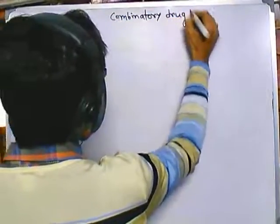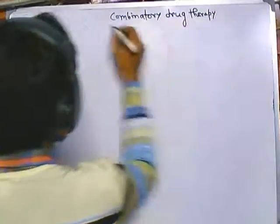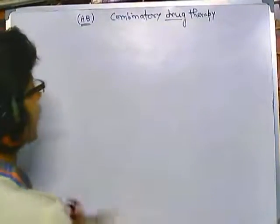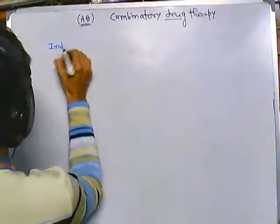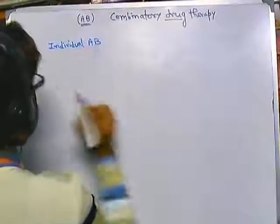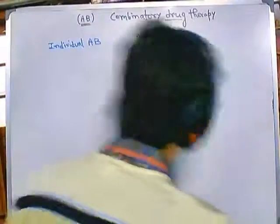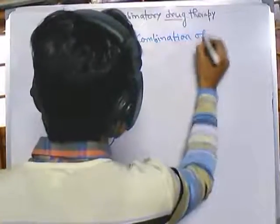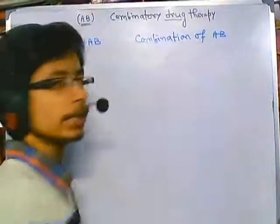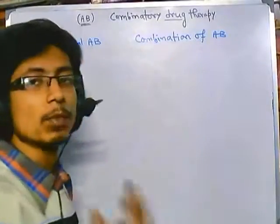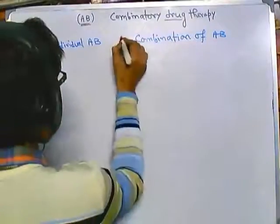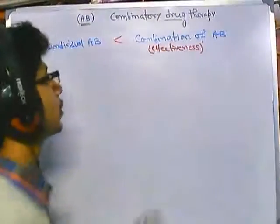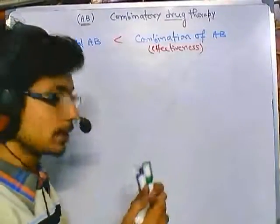Here we are talking about combinatory drug therapy — drug meaning antibiotics. We have a balance between two things: individual antibiotic versus combination of antibiotic. It was found that this combination of antibiotic is more effective than the individual type. The effectiveness of combination is greater, and that's why people started using combinatory antibiotic therapy instead of single antibiotic therapy.